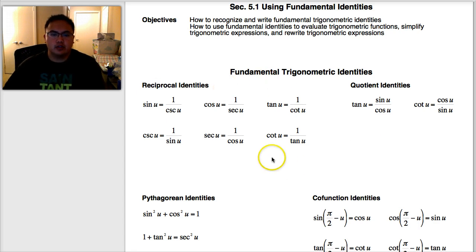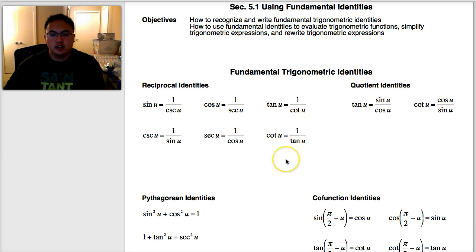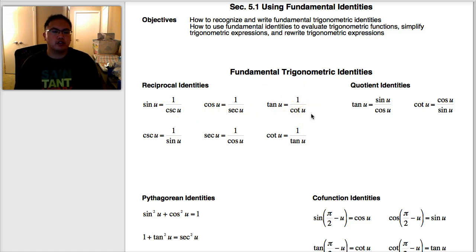These six you should already know. It might be written a little differently for you, but you know that cosecant is the flip of sine, secant is the flip of cosine, and cotangent is the flip of tangent. And the reverse is true: sine is the flip of cosecant, cosine is the flip of secant, tangent is the flip of cotangent. These six you should feel comfortable with.